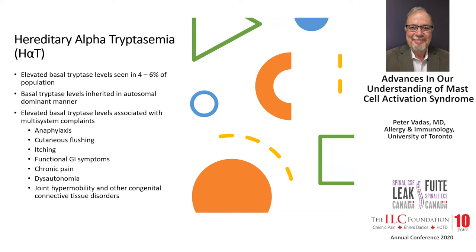Basal serum tryptase levels are regulated by genes inherited in an autosomal dominant manner — if one parent has it, the likelihood a child will inherit it is one in two. People with elevated basal serum tryptase have a number of complaints: flushing and itching, irritable bowel syndrome, abdominal pain, sometimes constipation or diarrhea, chronic pain, dysautonomia in the form of gastroparesis, swallowing disorders, bladder disorders or cardiovascular disorders, joint hypermobility, and anaphylaxis sometimes sporadically or following insect stings.